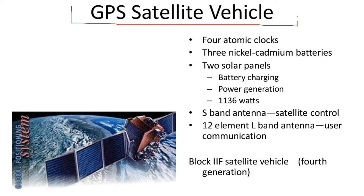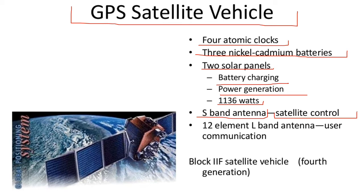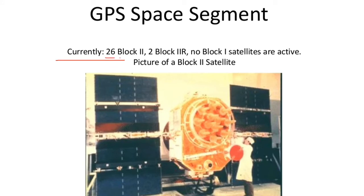The GPS satellite has specifications including 815 kg mass, 7.5-year life cycle, 50-bit per second data rate, and provides L-band frequencies L1 and L2. The satellite vehicle has 4 atomic clocks, 3 nickel cadmium batteries, 2 solar panels at 1,136 watts, 1 S-band antenna for satellite control station, and 12-element L-band antenna for user communication. Currently, 26 Block 2 satellites and 2 Block IIR satellites are active. This is a picture of a Block 2 satellite.